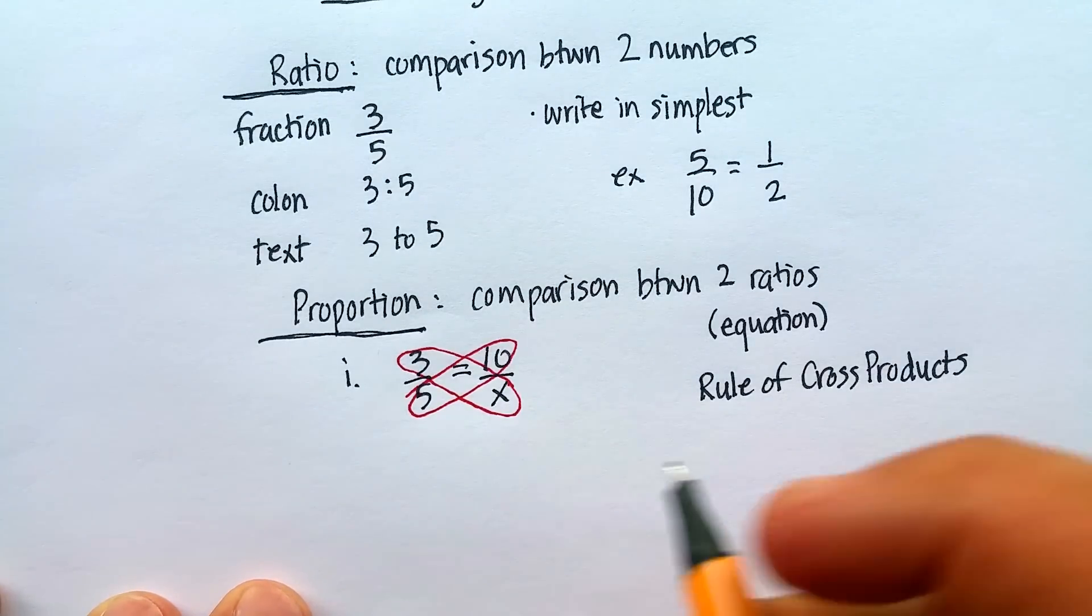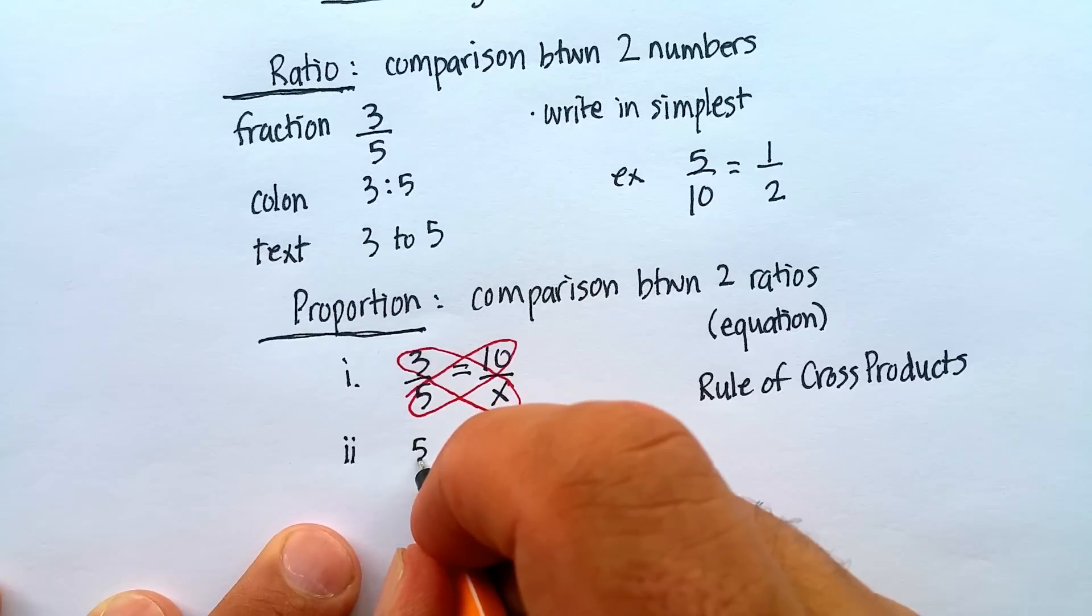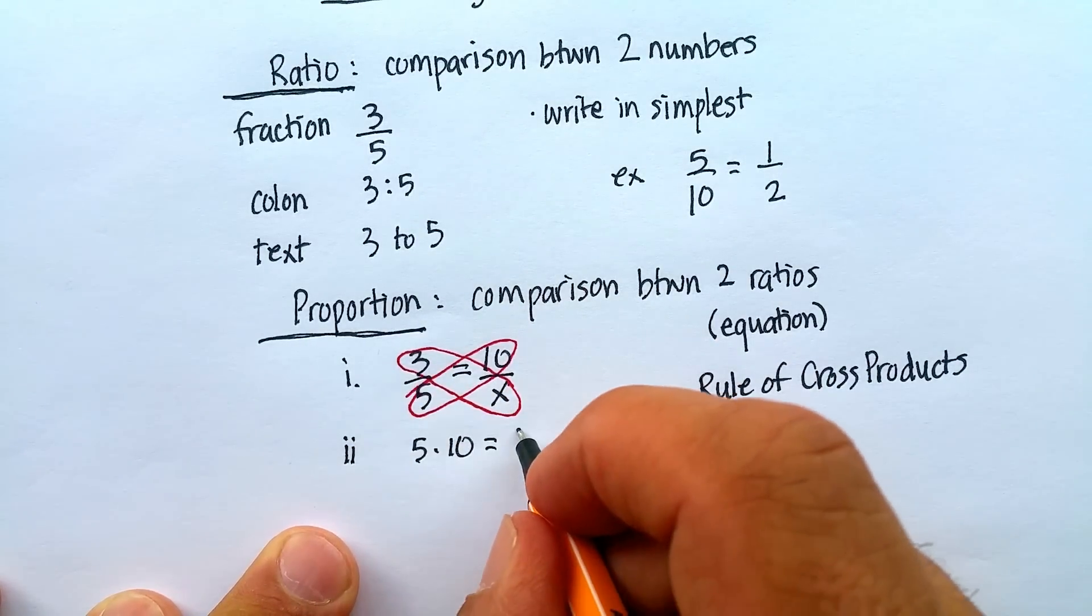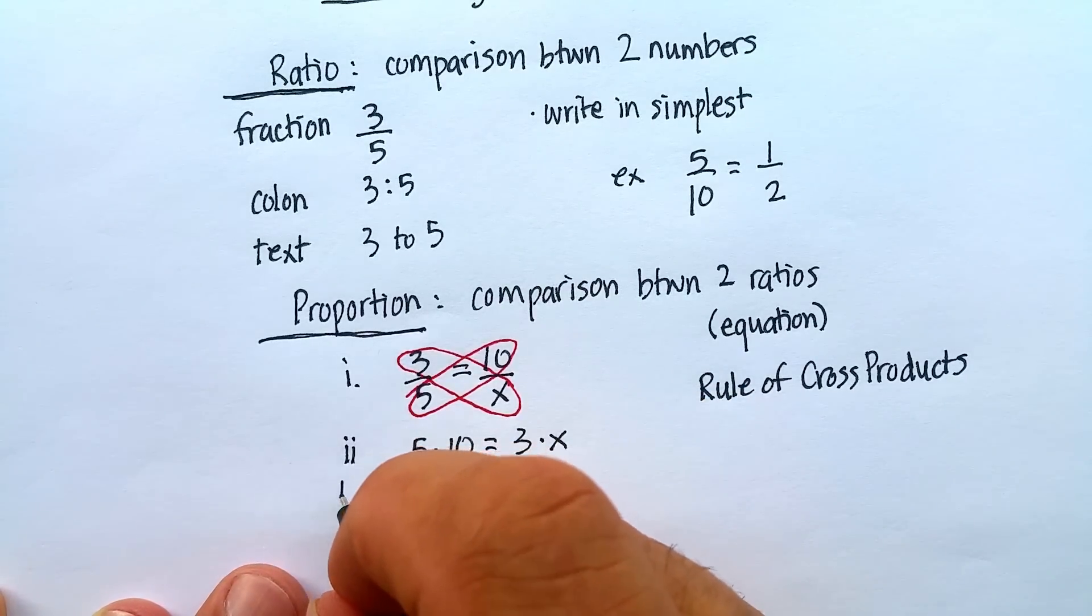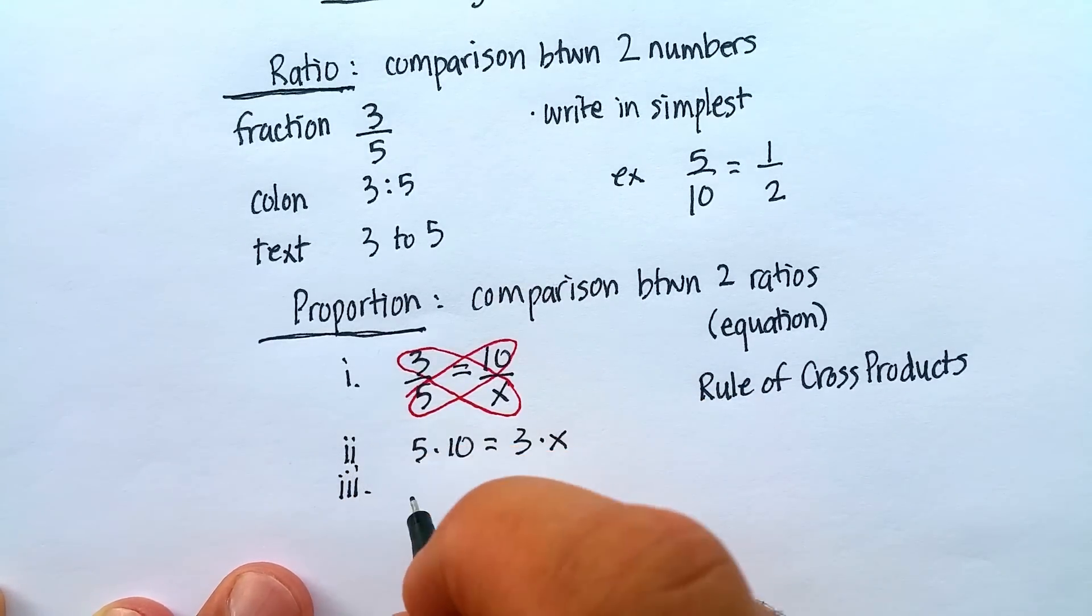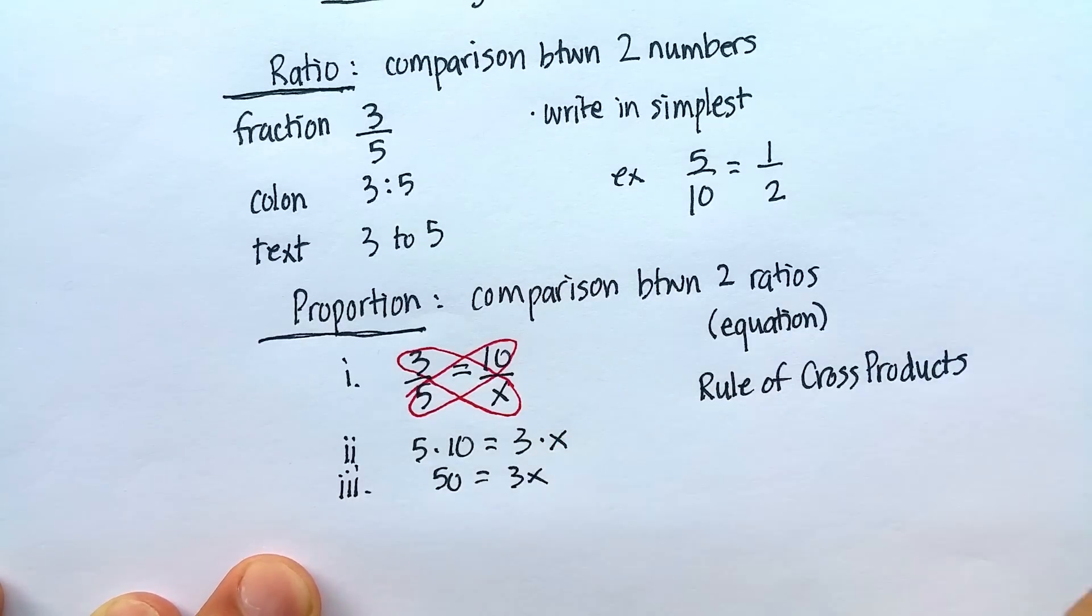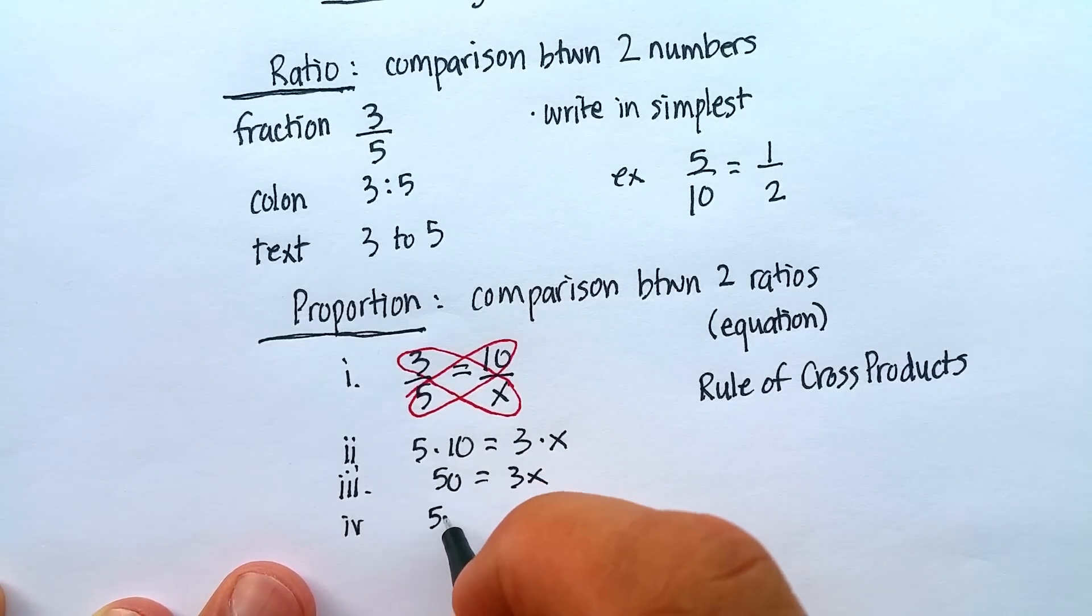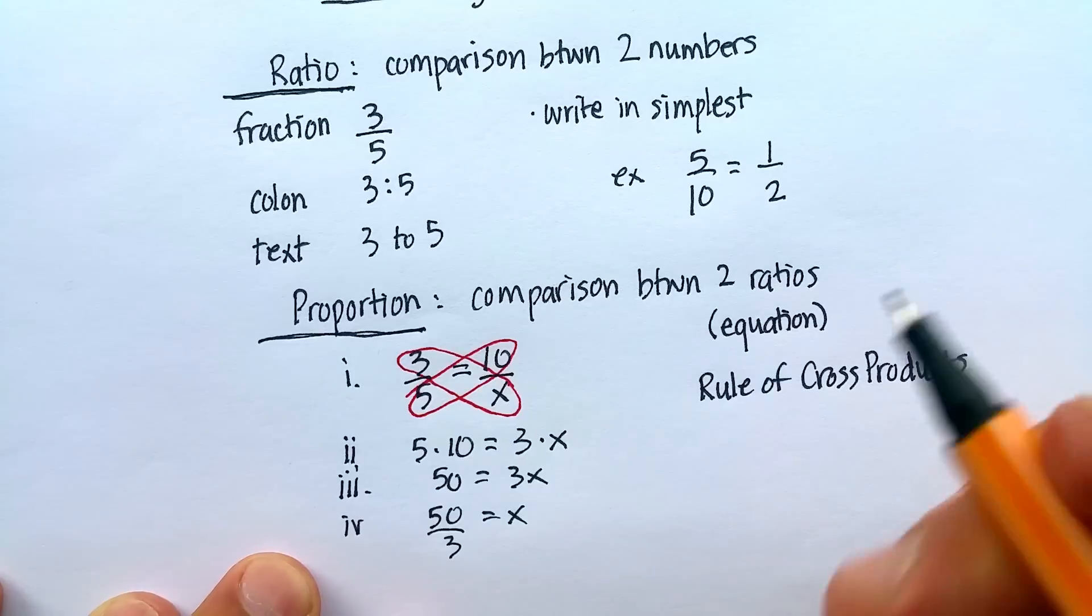How would I rewrite this? I would simply say 5 times 10 would be equal to 3 times X. And then you go ahead and use algebra to solve this. I would say 50 is equal to 3X. Then I would divide both sides by 3, and I would say 50 over 3 is equal to X.